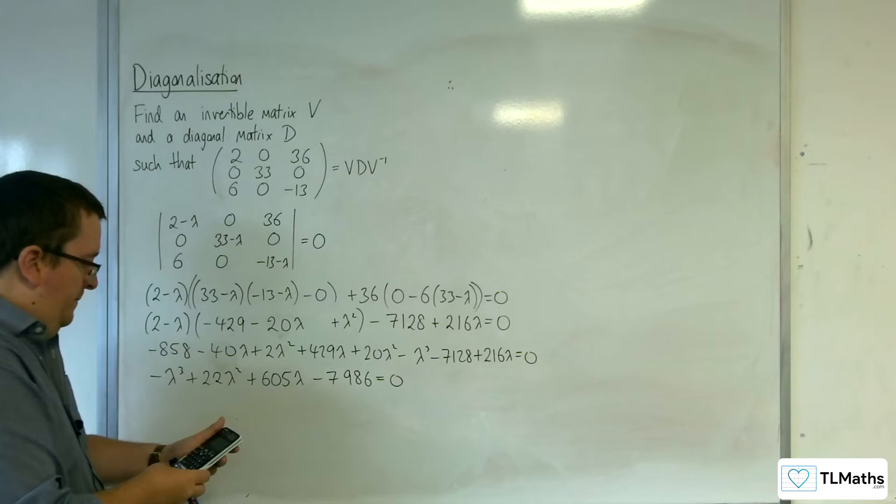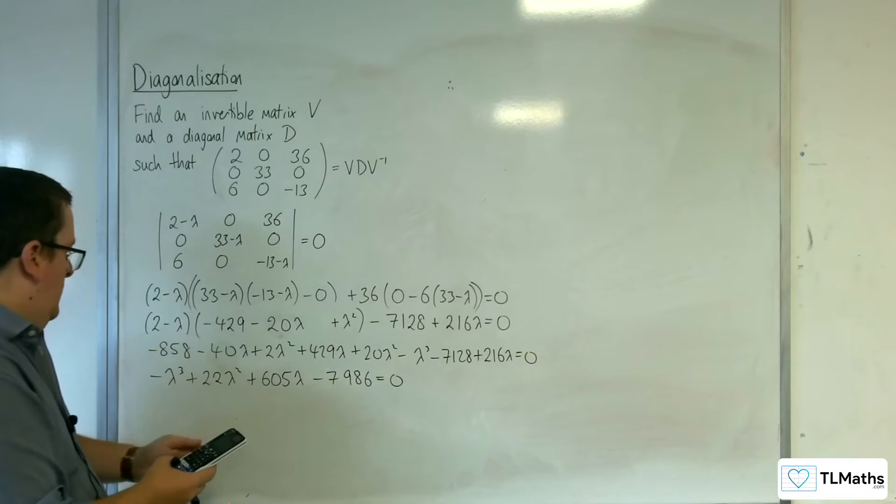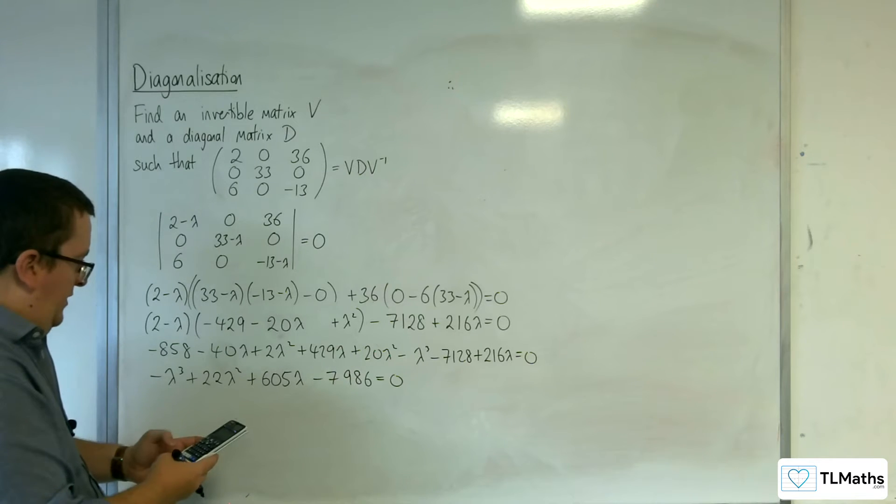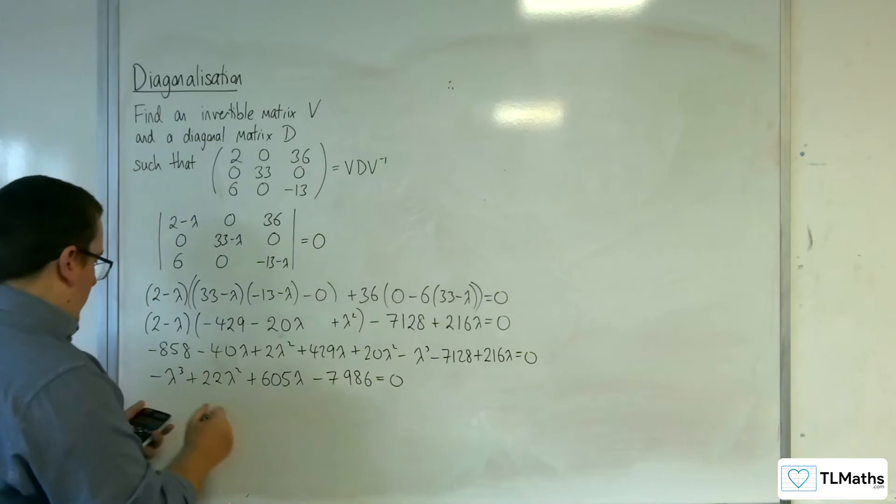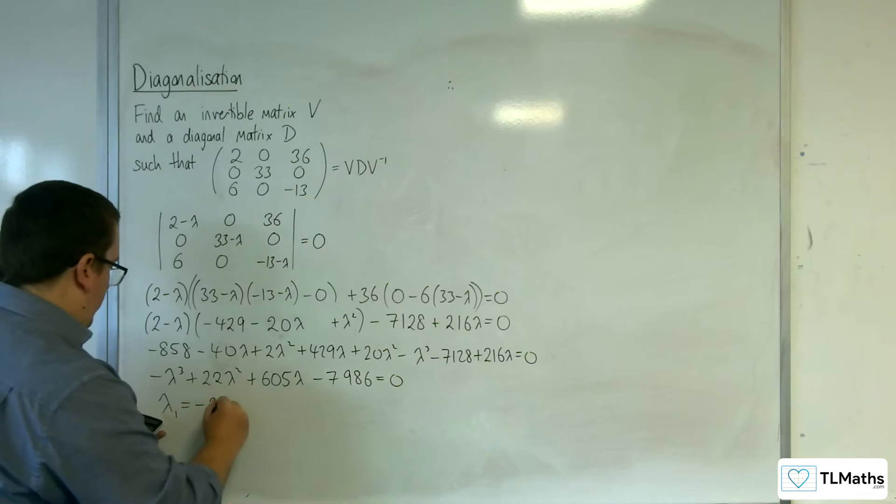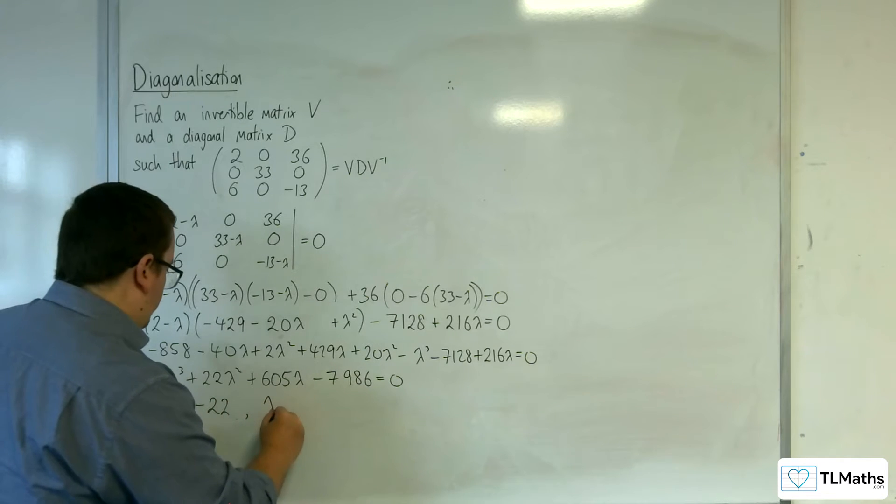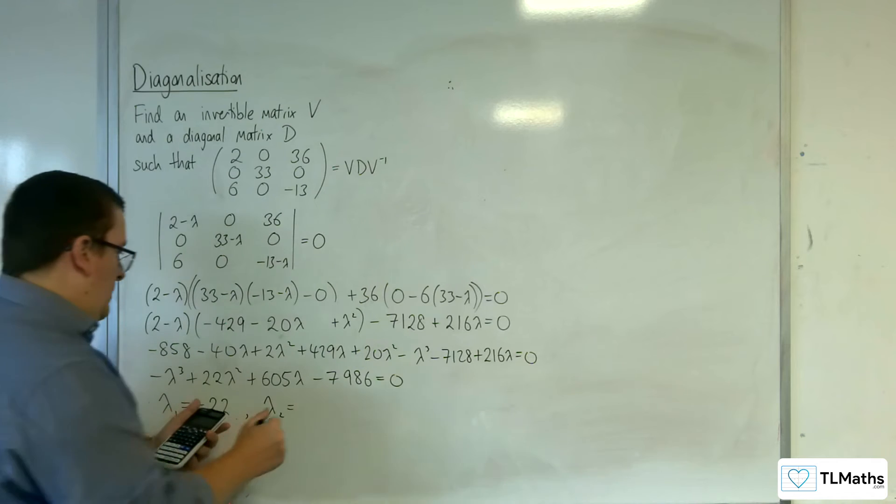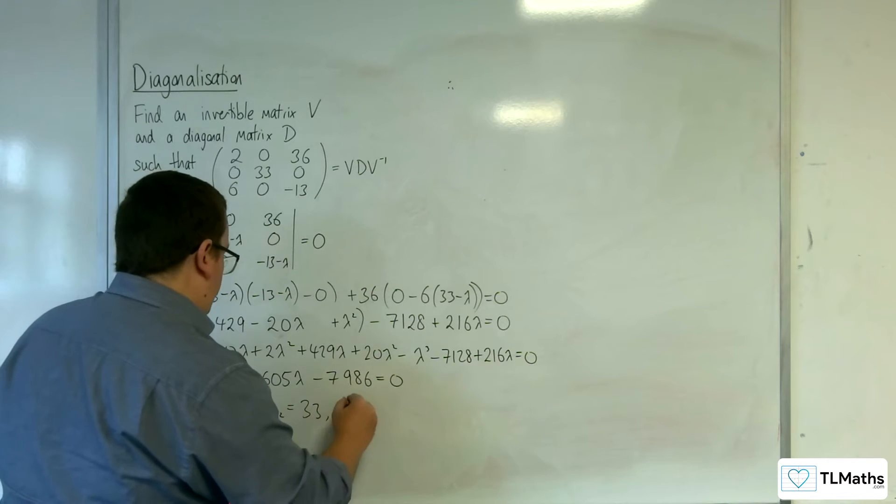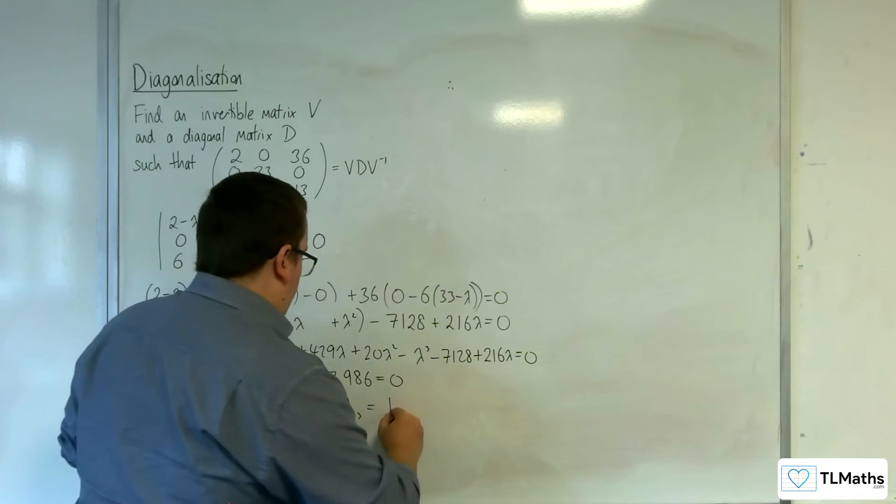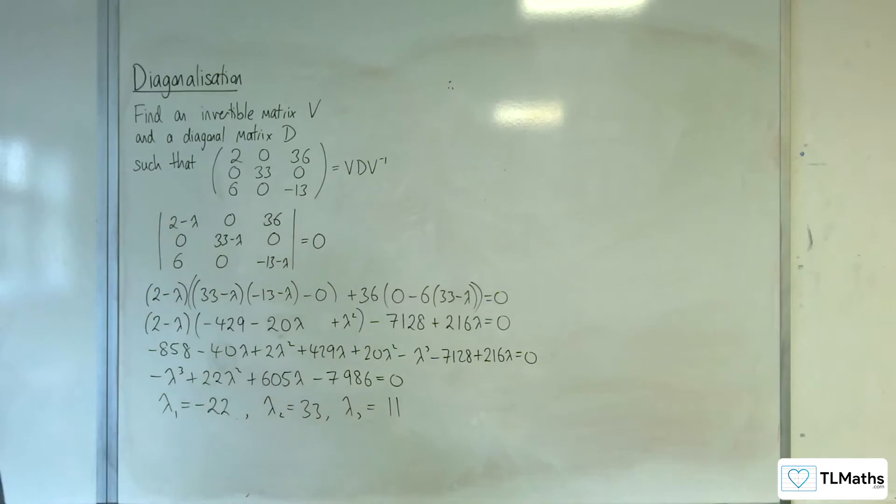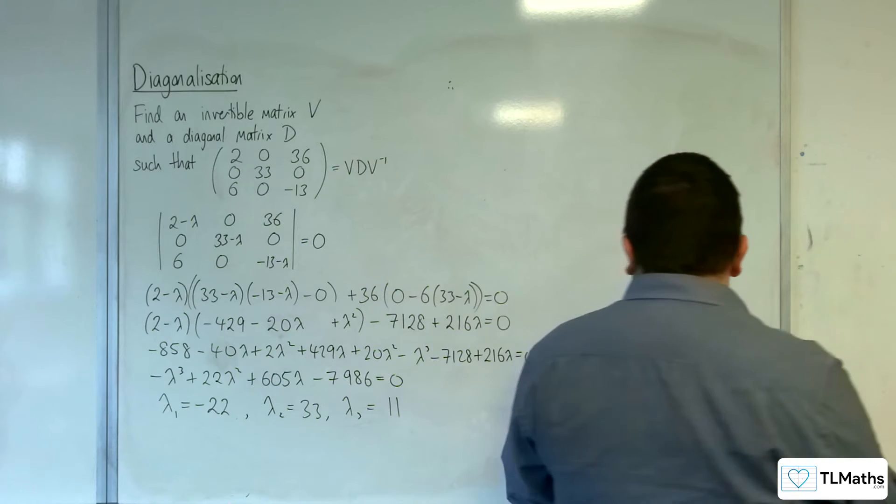Cubic solver, so minus 1, 22, 605, minus 7,986. And we get, lambda 1 is minus 22, lambda 2 is 33, and lambda 3 is 11. So there are my lambdas.